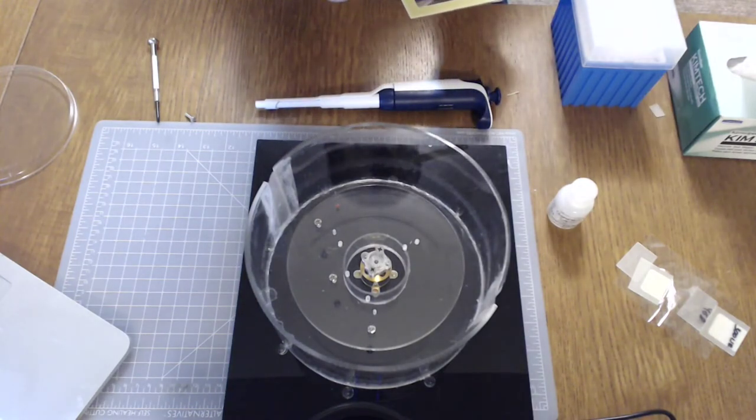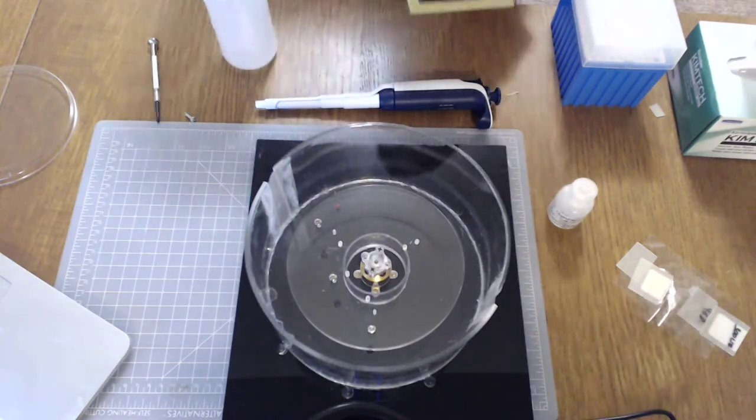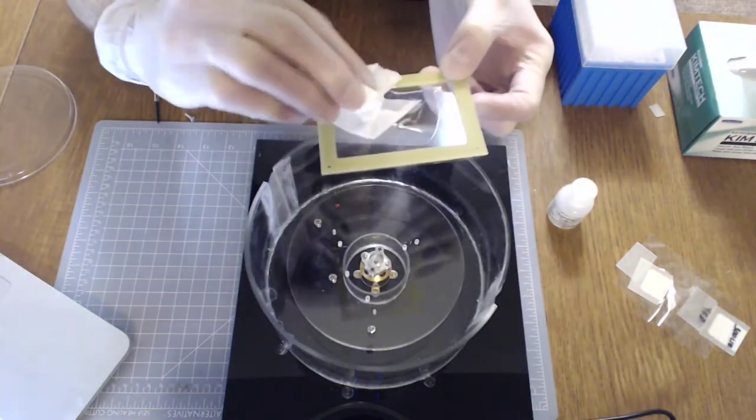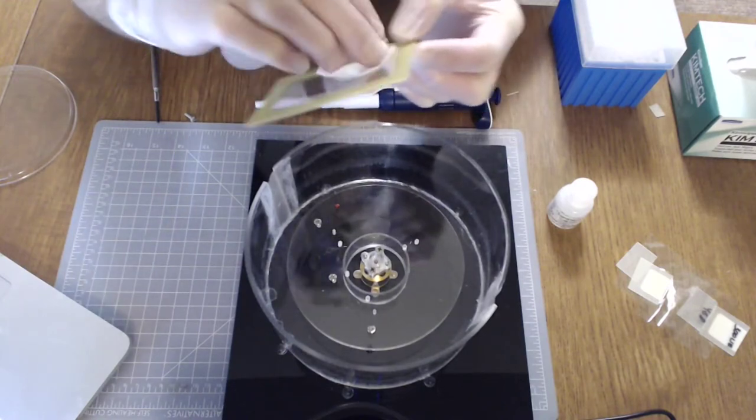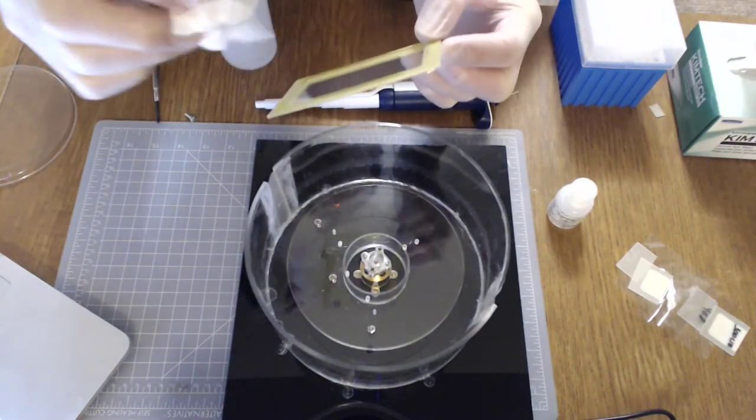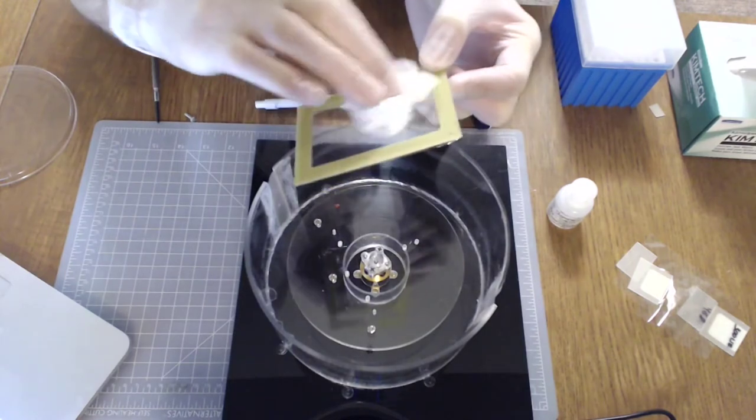So it gets the job done. Really all you need to spin coat these things is something that will hold it and spin at about a thousand rpm. I usually give it a quick cleaning with some IPA before spinning. If you have an ultrasonic bath that's a good way to do it as well.